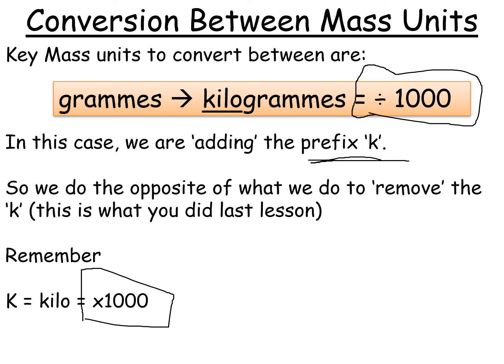Now, the easiest way to remember this is don't try and remember everything I've told you there just now. Just remember that if you're getting rid of K, you times by 1,000. So if you're adding it back in, you do the opposite, you divide by 1,000. So just remember that getting rid of K, you times by 1,000. And to add it back in, you just do the opposite. And in that way, you won't get confused.